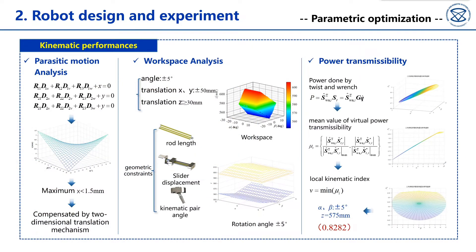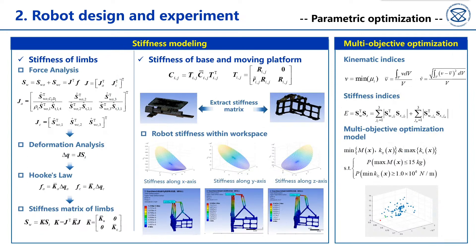Kinematic modeling of the robot is implemented, including the parasitic motion, workspace, and power transmissibility. Stiffness modeling is next to be built. The compliance matrices of parking device, base, parallel module, and serial module are added to compute the stiffness model of the robot.